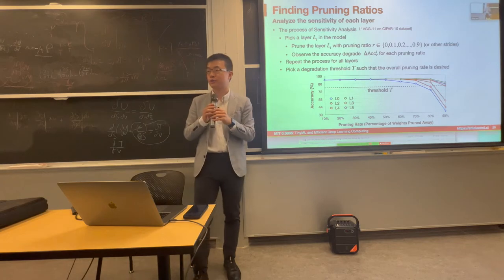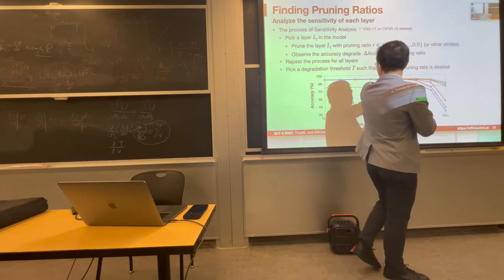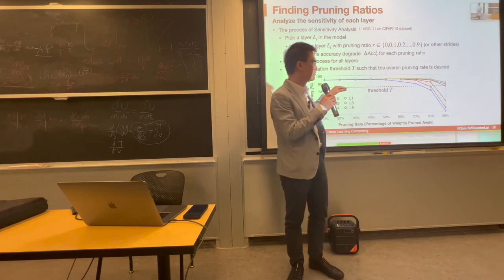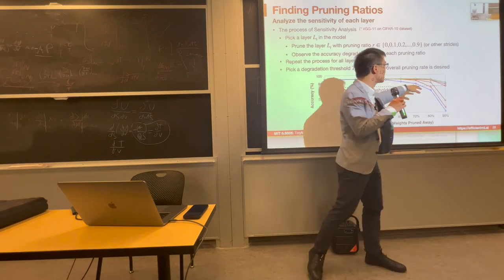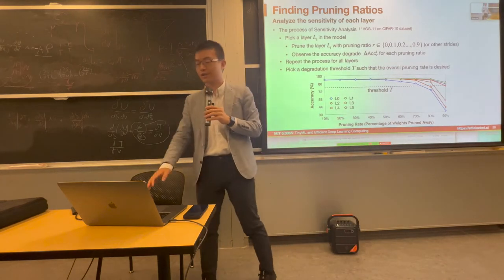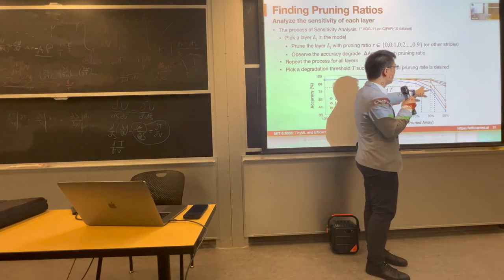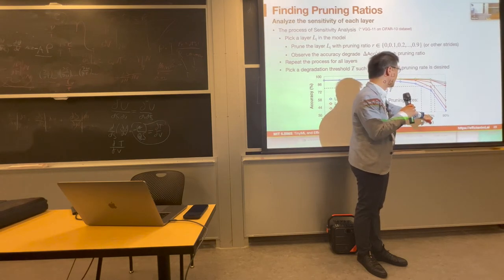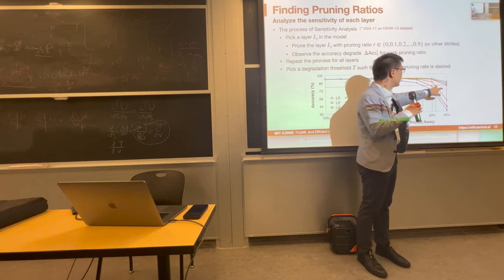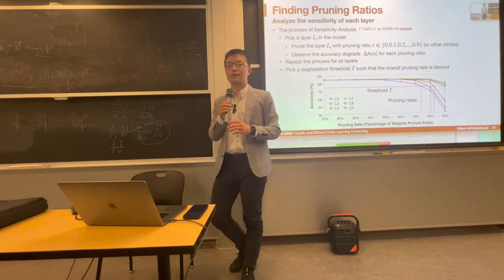To choose the pruning ratio, we set a threshold — say we want to lose no more than 5% or 10% accuracy. We cut through the sensitivity map and find the intersection, which indicates the sparsity target for each layer. For a sensitive blue layer, that intersection might be at about 72-75% pruning ratio. For less sensitive layers, we can prune more than 80%.